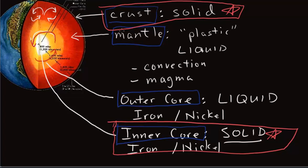So we have crust, mantle, core. Outside, very outside solid, very inside solid, and then the parts in between are liquid.